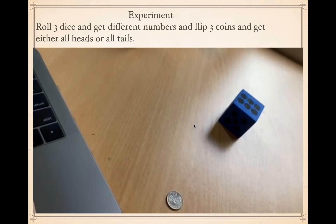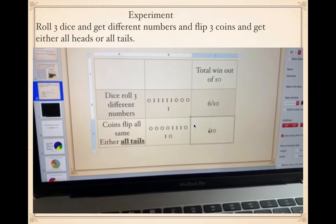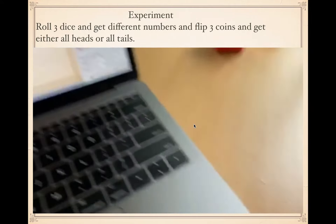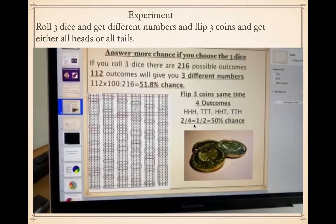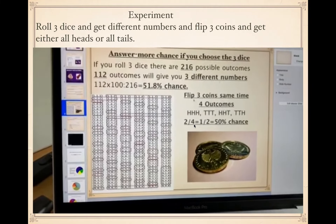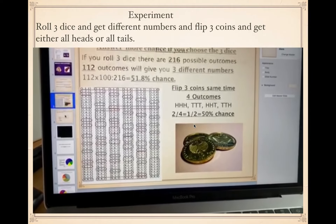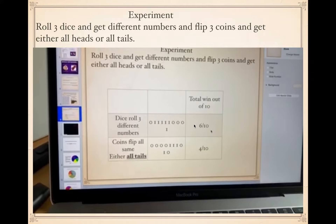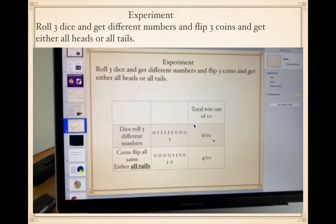After ten rounds, the results were six out of ten for rolling the dice and four out of ten for coins. As predicted by our probability calculation, the dice wins. I've done this experiment a few times and every time the dice wins — that must be saying something. You can try this at home if you have three coins and three dice.